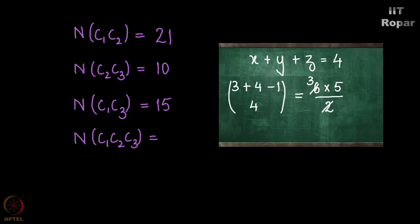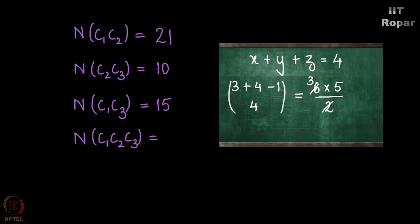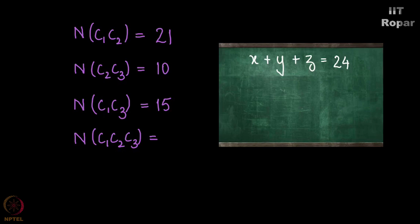What will n of C1∩C2∩C3 be? If all three conditions happen simultaneously, will there be such a solution? Even if I substitute the minimum values 7, 8, and 9 in place of x, y, z I get 7 plus 8 is 15, 15 plus 9 is 24 — which is an invalid solution. Hence n of C1∩C2∩C3 is 0.